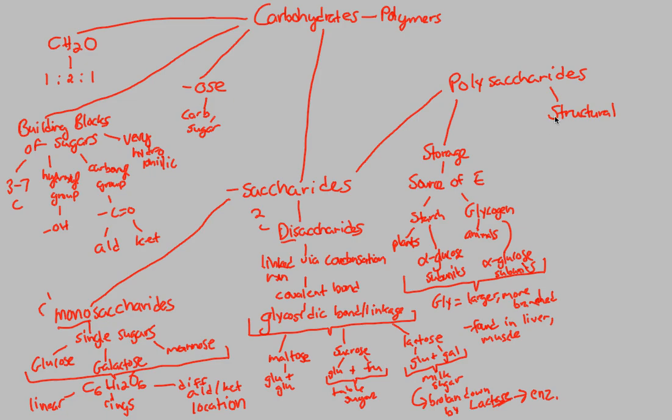Lastly, structural polysaccharides. There are two types of structural polysaccharides you need to know. One of them is cellulose. This is not the same thing as cellulite. Please do not associate this with cellulite. Completely different things. This is cellulose. And the other one is chitin. Not chitin, but chitin.